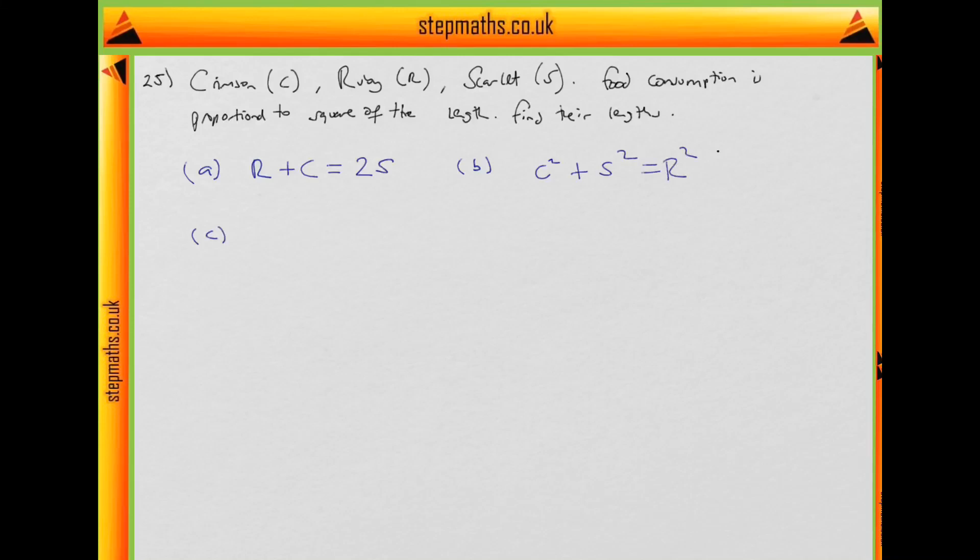And in part C, we're told that two crimson macaws and a scarlet macaw put together are one metre long. And well, that means 2C plus S equals 1. So what we notice is we have here an equation relating S and C.